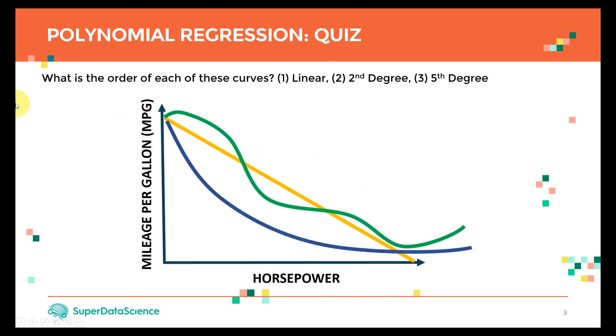Let's take a look at a quick quiz. Here we have a relationship between horsepower and mileage per gallon, or MPG, which is one practical example we're going to be covering when we go to the Jupyter notebook and start to build our projects. What I want to see is which one is linear, which one is second degree, and which one is fifth degree out of these green, orange, and blue lines. Please go ahead and pause the video, and I will see you guys after the challenge.